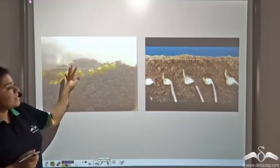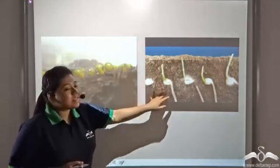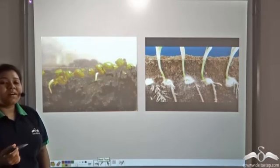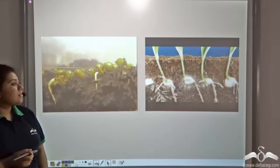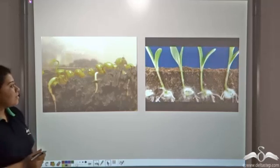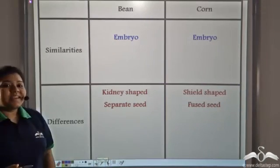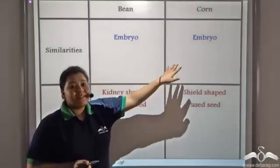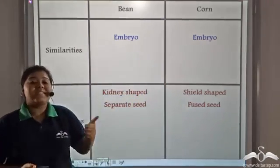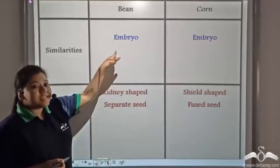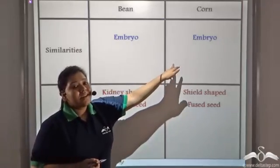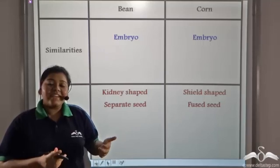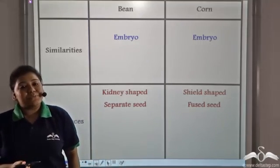This is a bean seed. This is a corn seed. See both of them grow into a new plant. So from here we can say that both these seeds have an embryo. This is the first similarity between bean and corn — both of them have an embryo inside which grows into a new plant.